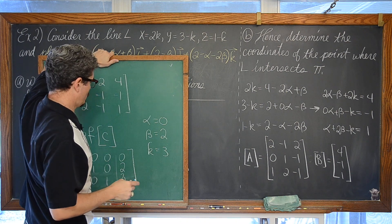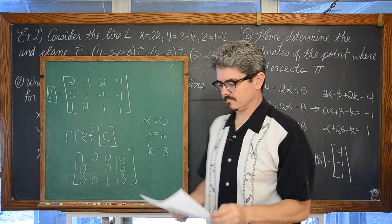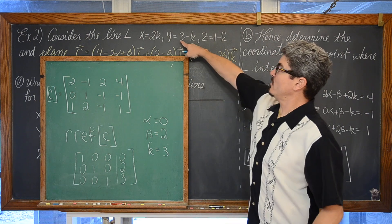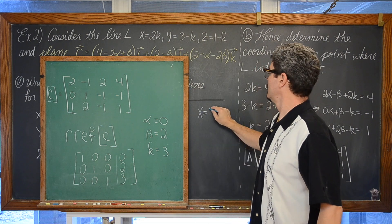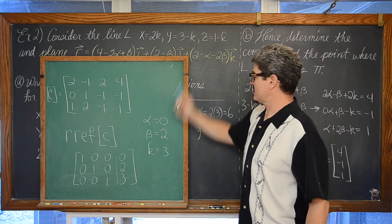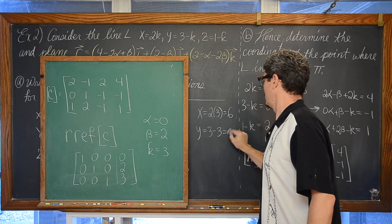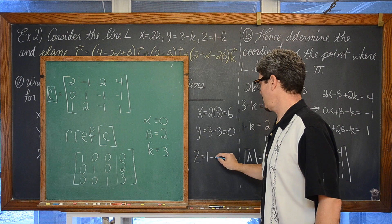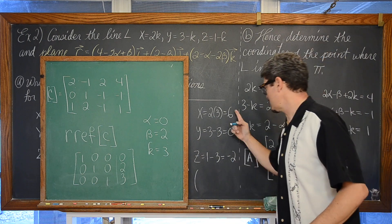Now, we can go back up here and say that, looking at the equation of our line, now that we know that k is equal to three, we can look at the equation of our line and say x is equal to two times three, which is six, y is equal to three minus k, three minus three, which is zero, and z is equal to one minus k, which is negative two, and get your coordinate, your point of intersection is six, zero, negative two.